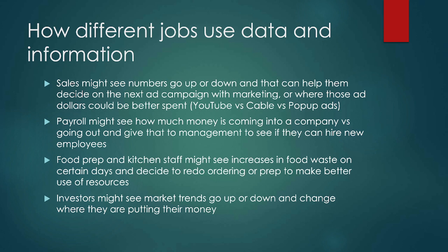Different jobs will use data and information in different ways. All jobs will use data to some extent and try to extrapolate information from it, but different companies and people will use it to different extents. A sales department might see sales numbers go up or down, helping them decide what might be happening with their next ad campaign. For instance, if a company uses nothing but pop-up ads, most people get really annoyed, some will stop going to the site, and that might mean web traffic goes down.